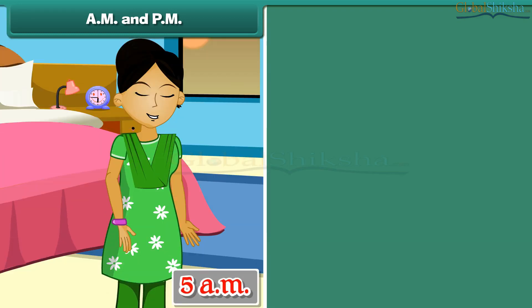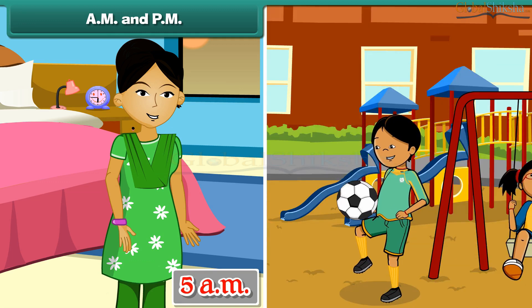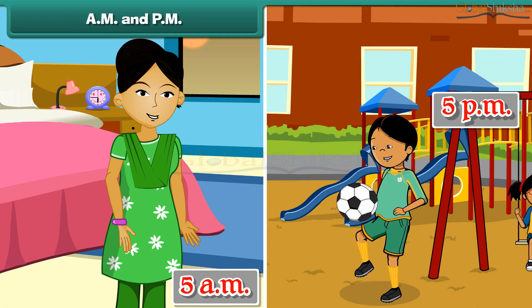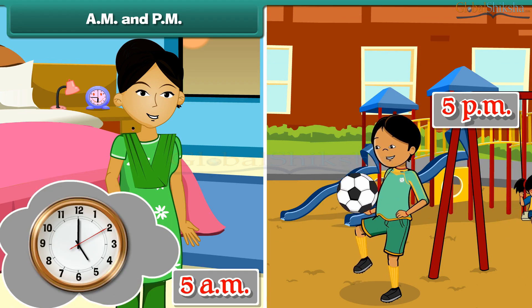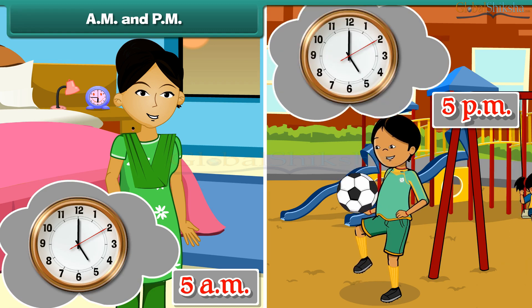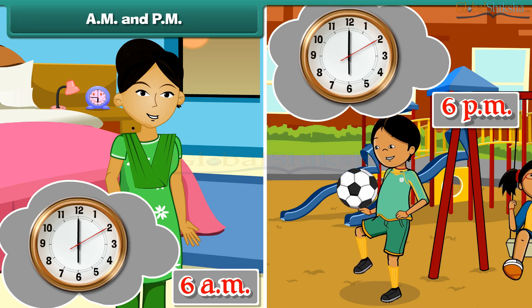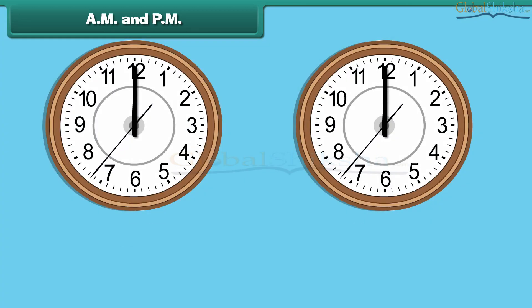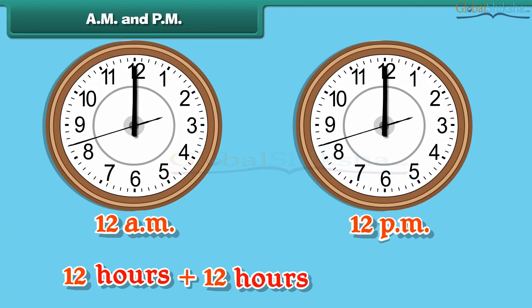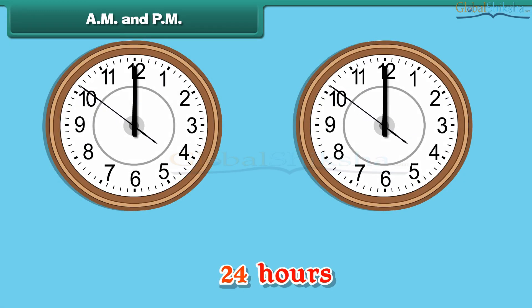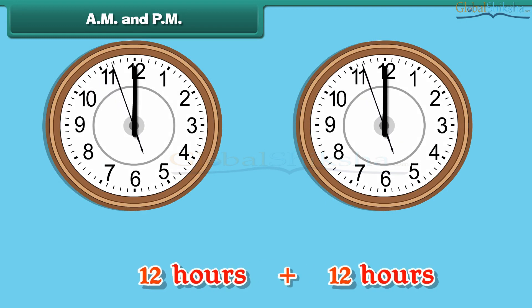AM and PM. Your mother wakes up at 5 o'clock in the morning. You go out to play at 5 o'clock in the evening. This means the clock strikes 5 twice in a day — once in the morning and once in the evening. This is true of every hour from 1 to 12, because there are 24 hours in a day. The hour hand touches each number from 1 to 12 twice in these 24 hours.